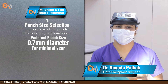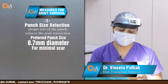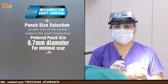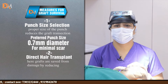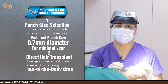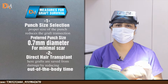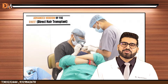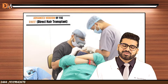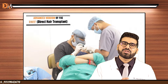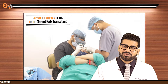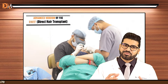The first important point is punch-size selection. Proper punch-size selection from grafts reduces the transaction rate. The second important point is direct hair transplant. In direct hair transplant, grafts spend minimum time outside the body, as harvesting and implantation happen simultaneously.